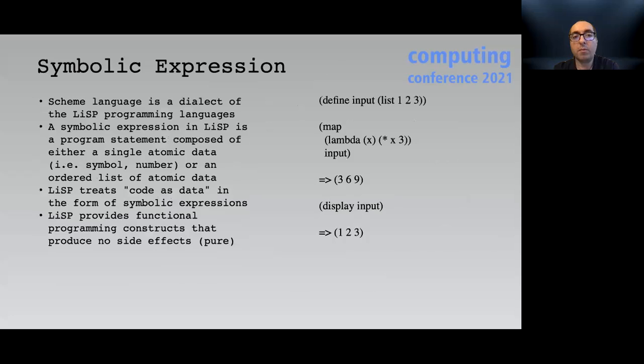A symbolic expression in the context of Lisp programming language is a program statement composed of either a single atomic data or an ordered list of atomic data. What differentiates Lisp from most other programming languages is that Lisp treats code as data in the form of symbolic expressions that provides enormous flexibility for programmers through its advanced macro system. As shown in the example, Lisp provides a function named map that here multiplies each item with three in the given list and then returns the result without modifying the input list. Therefore, it is a pure function.